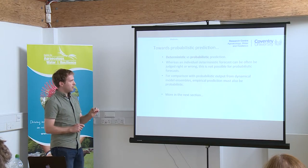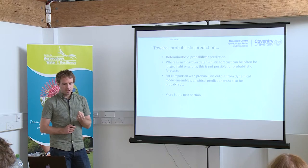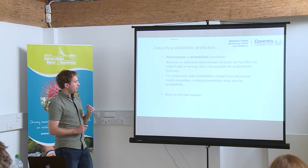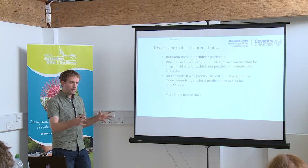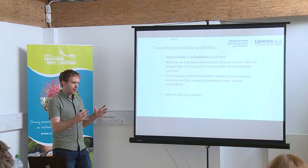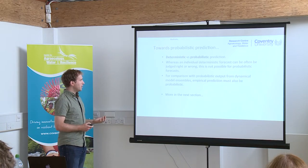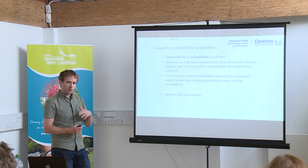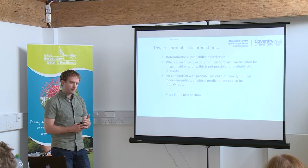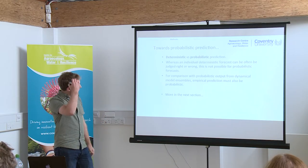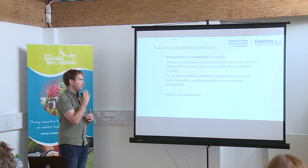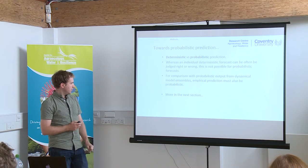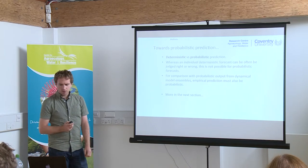Just a few words about the difference between deterministic and probabilistic predictions. In comparison with output from dynamical models, which have a number of ensemble members and therefore produce probabilistic forecasts, most empirical methods are deterministic. A deterministic forecast is individual — it can be judged right or wrong. It's very difficult to compare this with what we get from climate model forecasts, which are probabilistic in nature. So for comparison with probabilistic output from dynamical systems, our empirical forecasts need to be probabilistic as well.